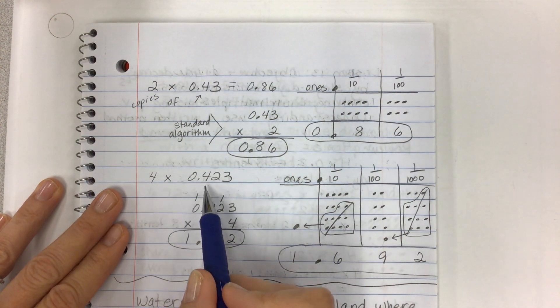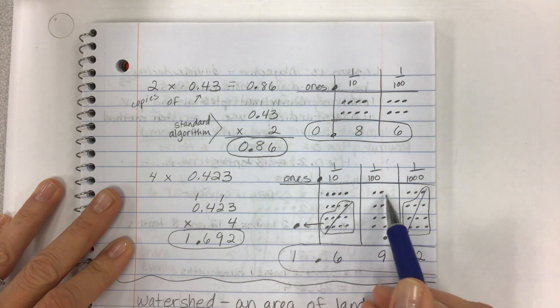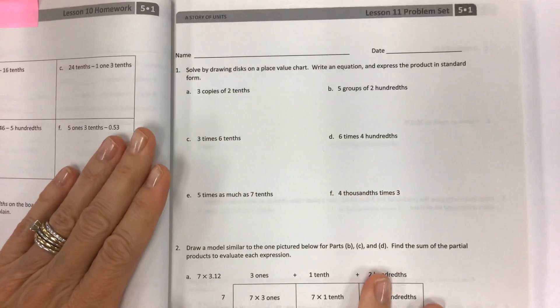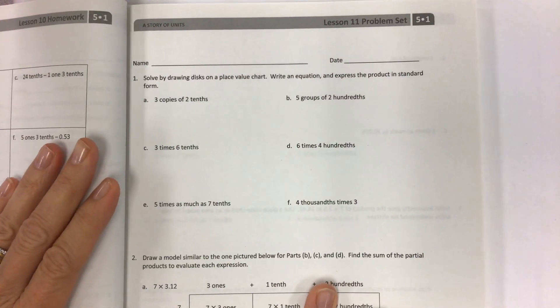And then here's the last one. Four copies of 423 thousandths. So similar to yesterday but we're just doing repeating of that same number. So remember pause the video if you need to and then let's get into the problem set so I can kind of help you along with it.